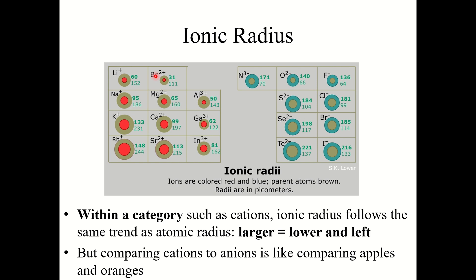Looking at examples of cations from second, third, fourth, and fifth row metals — lithium, beryllium, sodium, magnesium, aluminum, potassium, calcium, gallium, rubidium, strontium, indium — the neutral atom is shown in a light green-brown circle and the cation in red. In all cases, the cation is smaller than the neutral atom because the cation has lost electrons, so the remaining electrons feel a greater pull toward the nucleus, causing the radius to shrink.